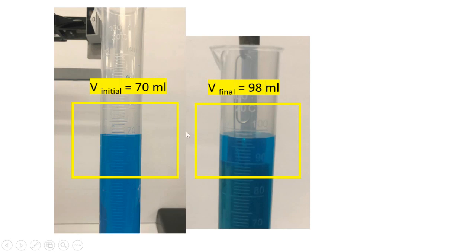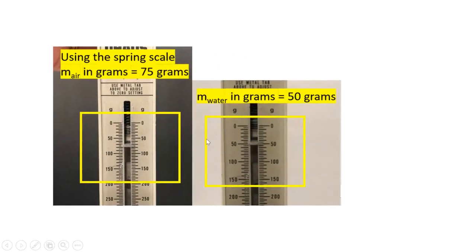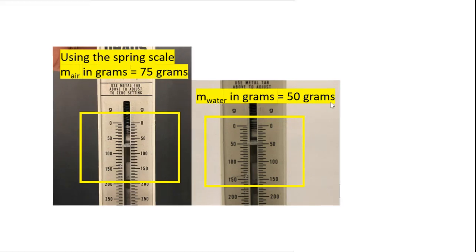Now we are going to compare the initial and final volume. So the initial volume was 70 ml and the final volume is 98 ml. The initial mass or the mass in the air 75 grams, and the mass in the water 50 grams.